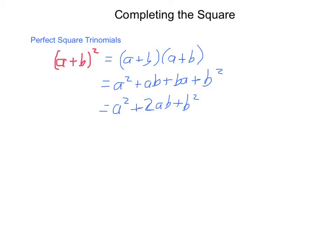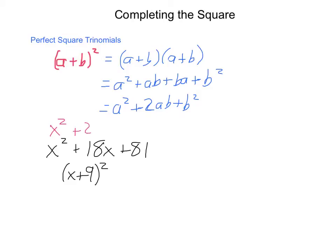When you have a quadratic expression that resembles this form — a squared term first and last, and whatever the square roots of those numbers are, multiplied by each other and doubled in the middle — you have a perfect square trinomial. For example, x squared plus 18x plus 81 is simply x plus 9 squared. x times x is x squared, 9 times 9 is 81, 9 times x is 9x, and doubled gives 18 in the middle. So we have x squared plus 2 times 9x plus 9 squared.